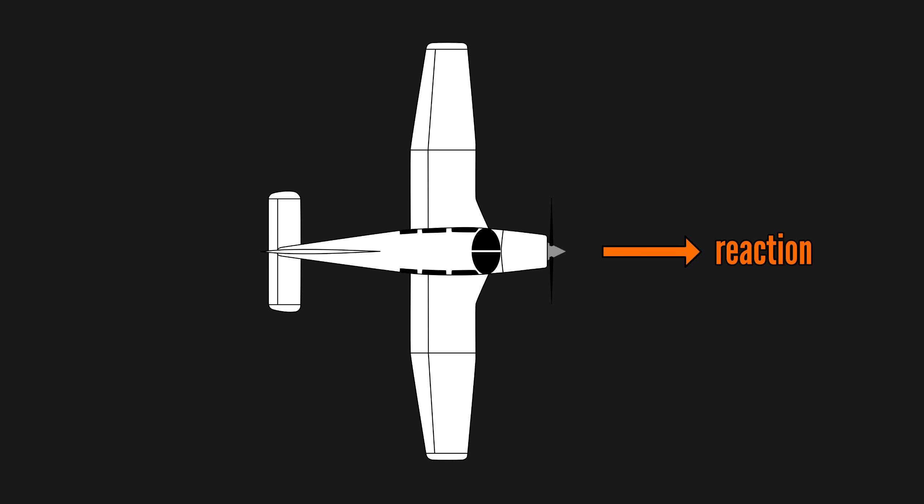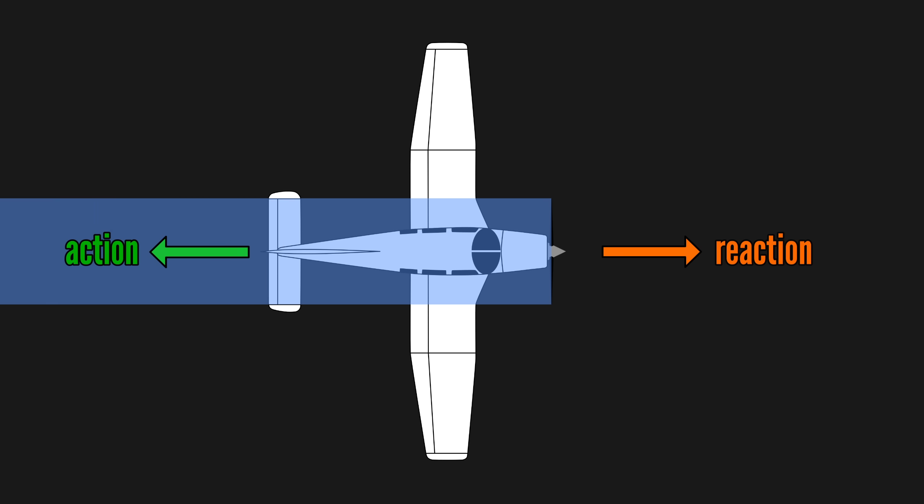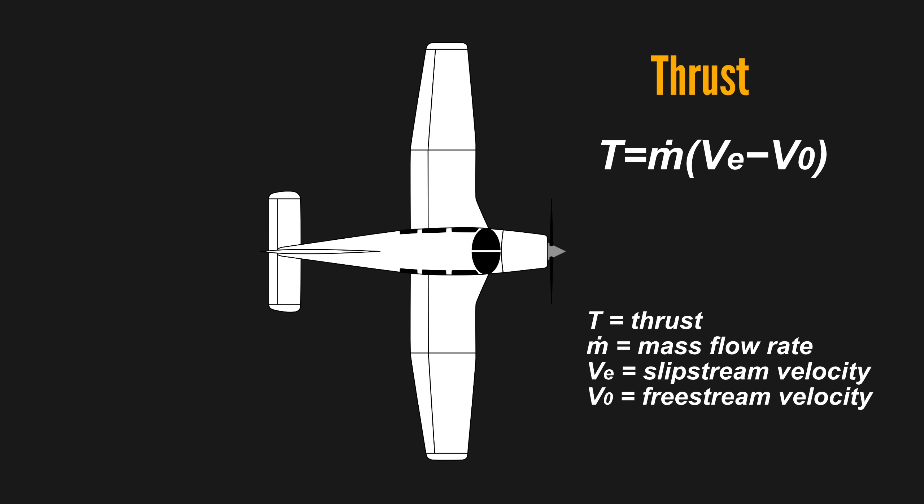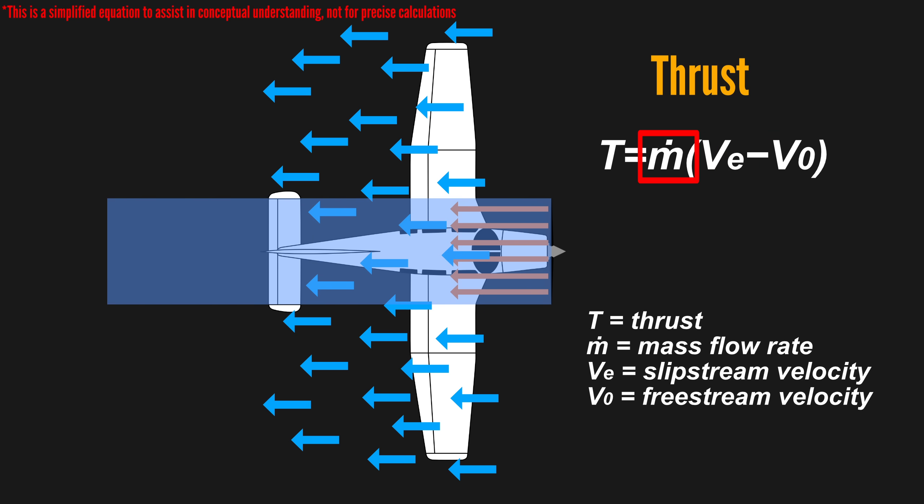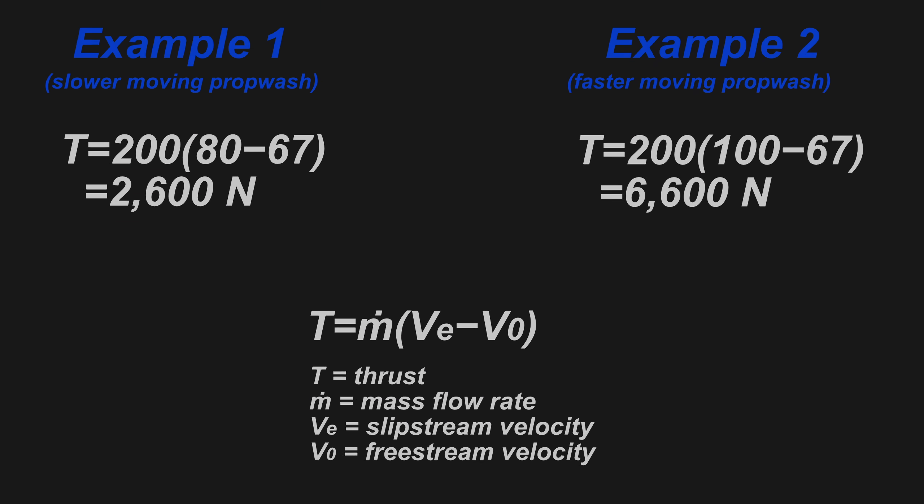Thrust is the reaction to the action of blowing air back. Thrust created is equal to the velocity of the prop wash minus the velocity of the freestream air times the mass flow rate of air moved. So the faster the propeller blows air, the more air is moved per second and the more thrust is created.